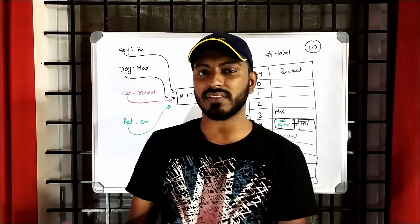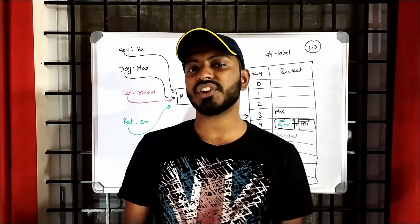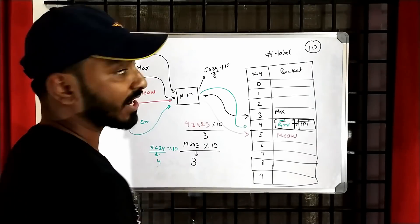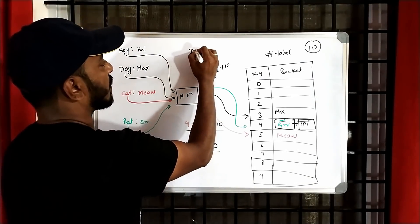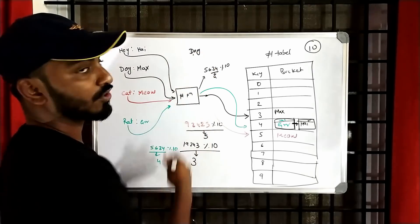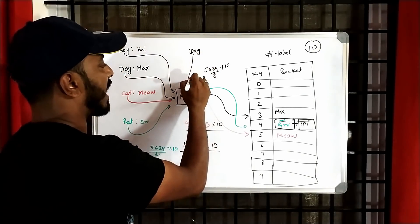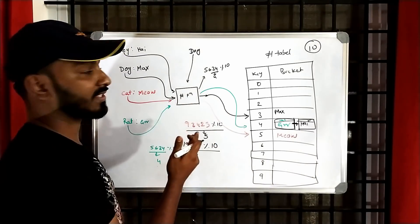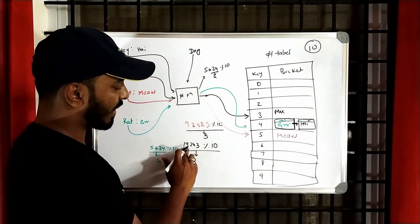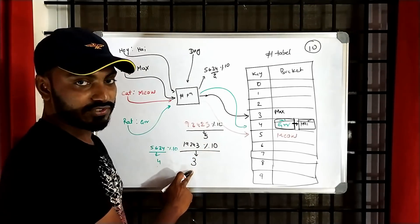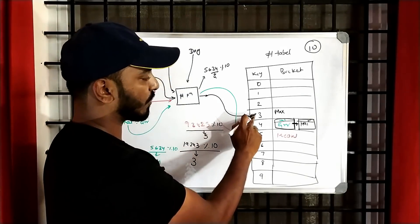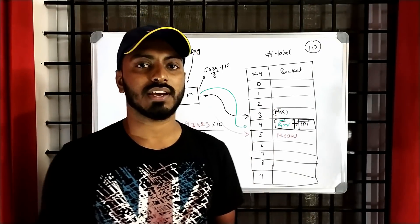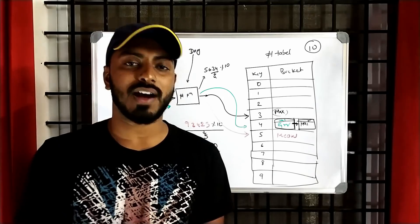Now that you know how to save a key-value pair in a hash table, retrieving is also straightforward. Say you're trying to retrieve the value for dog. Take this key, give it to the hash function, and it will return the same hash value as before — 19343. Do a modulus operation, you get location 3. Go to the table, go to the third location, and you will see the value max — just retrieve it. It's fast.